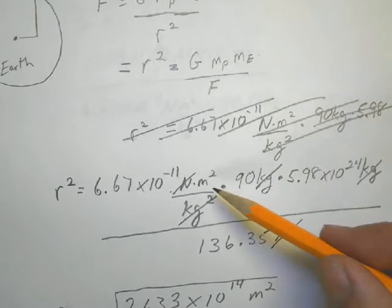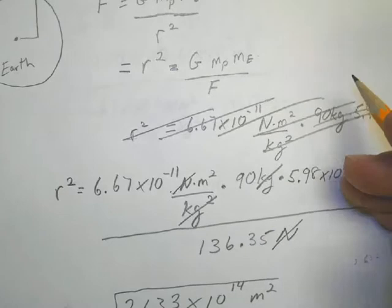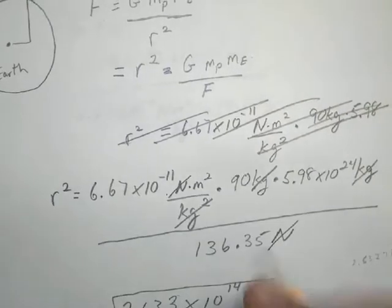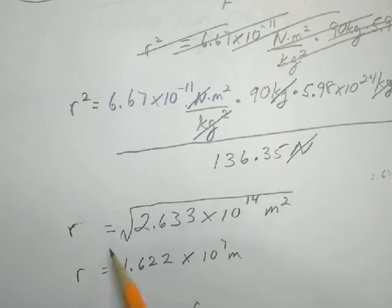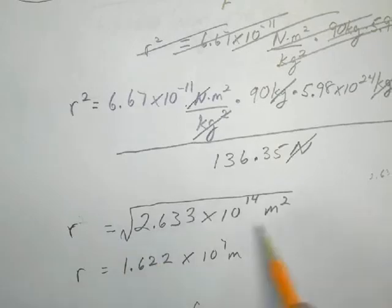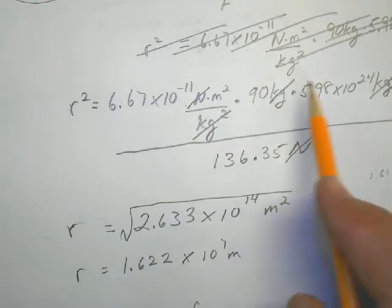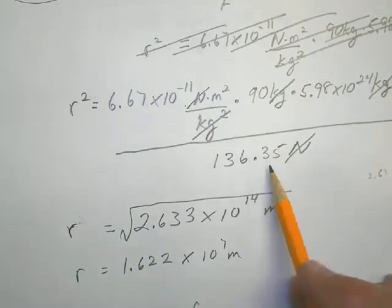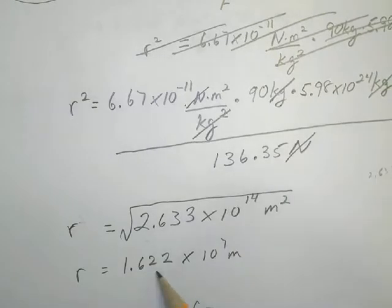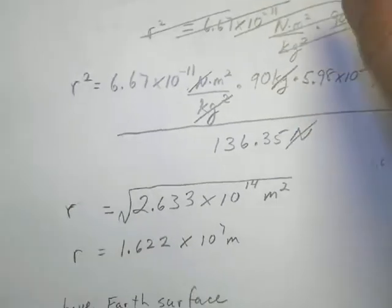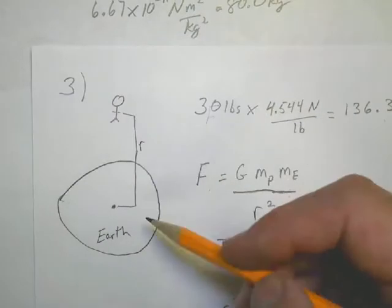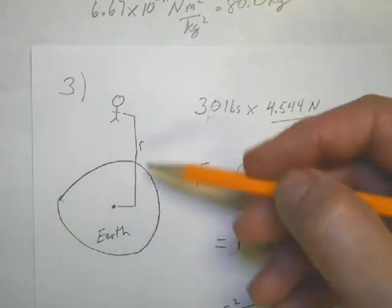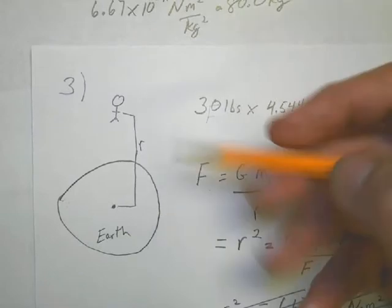So taking the square root from the equation, the radius above the center of the earth is the square root of this number, which comes from plugging all these numbers in your calculator above here. And the square root of that is 1.622 times 10 to the 7th meters. So there's a little trick here. That's the radius where Pete is above the center of the earth. So drawing this diagram helps you think about what's going on.